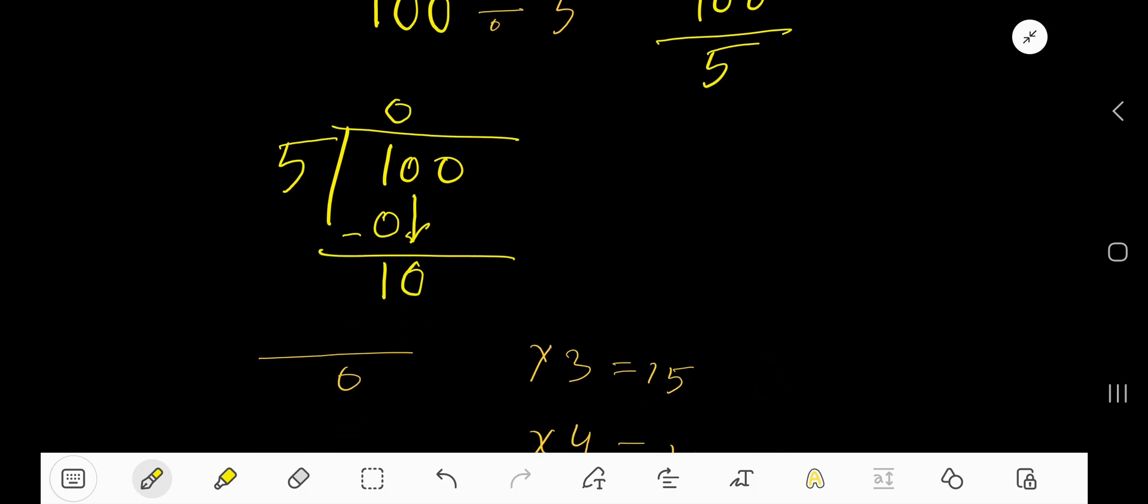5 goes into 10 how many times? Okay, so look, we have to find our multiplication table of 5. 5 times 1 is 5. 5 times 2, just add 5 with this 5, that is 10.